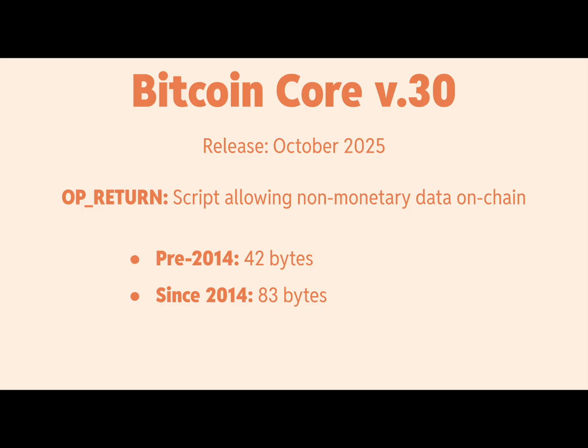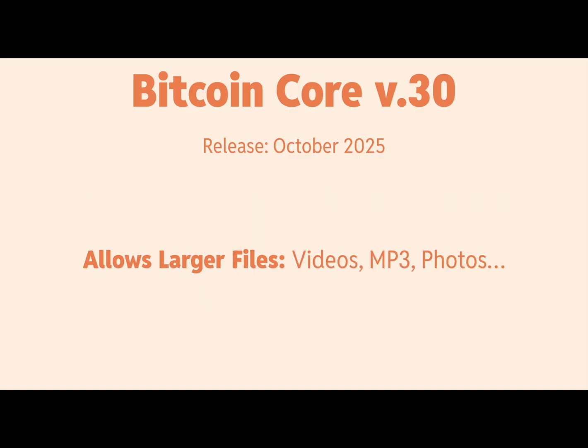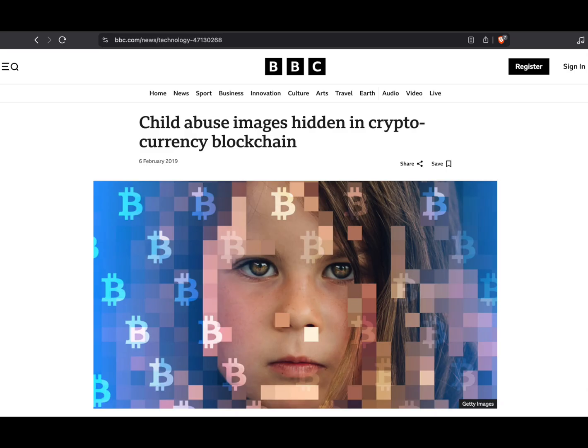A major change is coming with Bitcoin Core version 30 in October 2025. The specific change is to OP_RETURN — a script allowing non-monetary data on-chain, such as JPEGs, images, inscriptions, and runes. Pre-2014, 42 bytes of non-monetary data were allowed. Since 2014, it's been increased to 83 bytes. However, Core version 30 will allow 100,000 bytes of data — that's massive — enabling much larger files like videos, MP3s, and photos, including potentially illegal content that we've already seen uploaded on other blockchains.